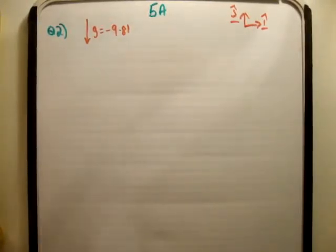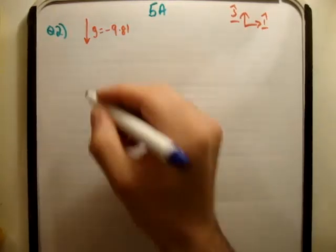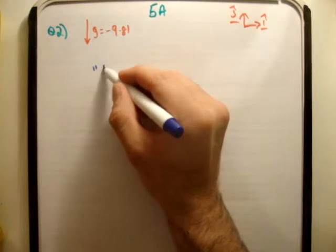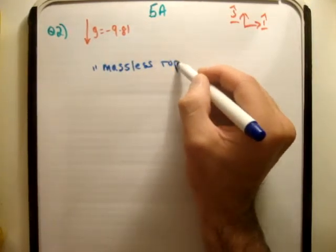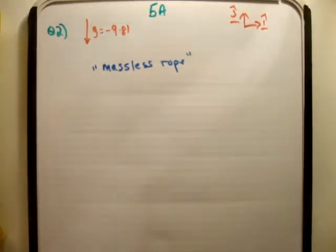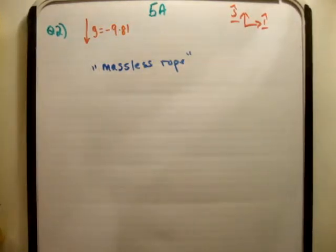In this video I'm going to continue with exercise 5A of the book Fundamental Applied Mathematics. We're on page 117 and the question is 2. Before I continue, I'd like you to watch my video on the massless rope. This is something to do with Newton's third law. It's something I think you need to know in order to continue these questions.